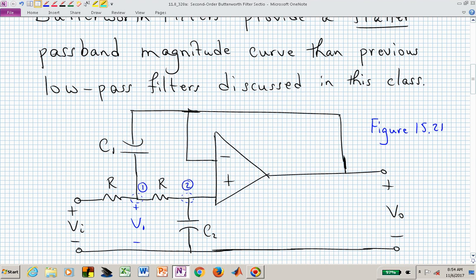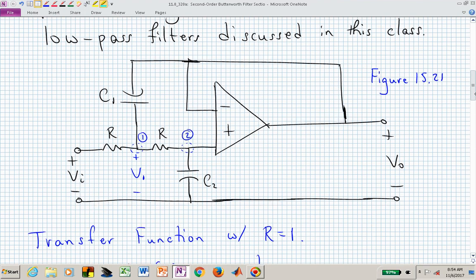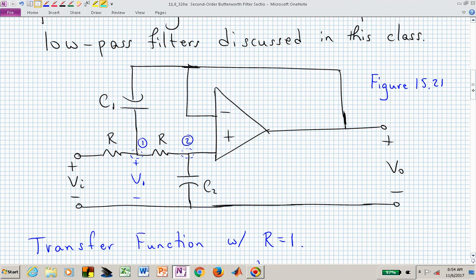So here is our second order section, and the transfer function that we will derive will keep C1 and C2 as variables, but we go ahead and just let R, the resistor values, be set equal to 1. And I think it's a good exercise for you to now try to find the transfer function between V sub i, the input, and V sub o, the output. And again, this is coming to us in Chapter 15, Figure 21.